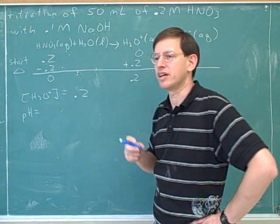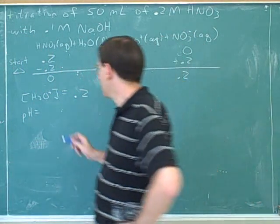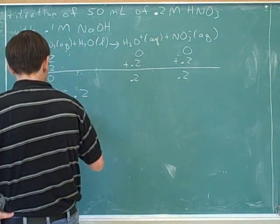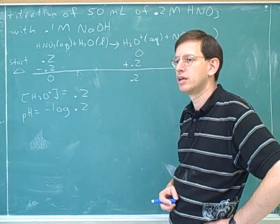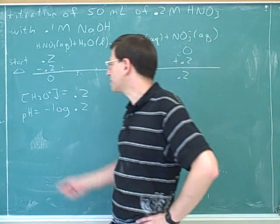Well, what does it mean to take the P of something? The negative log. So we need to take negative log of 0.2. So you take the log of the concentration out of the actual moles. That's right.